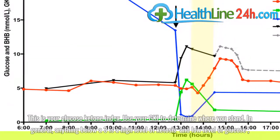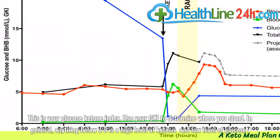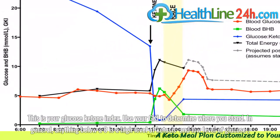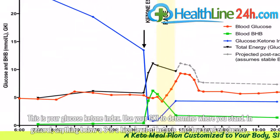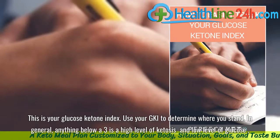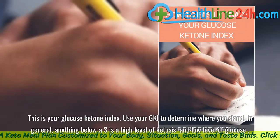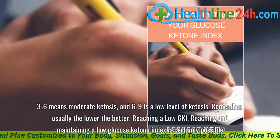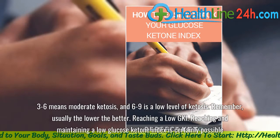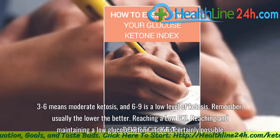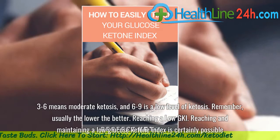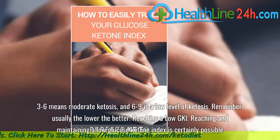Use your GKI to determine where you stand. In general, anything below a 3 is a high level of ketosis and low level of glucose. 3 to 6 means moderate ketosis, and 6 to 9 is a low level of ketosis. Remember, usually the lower the better.